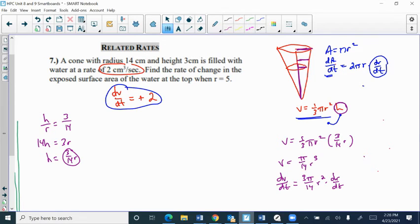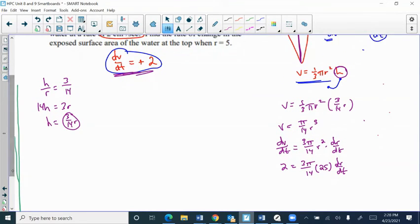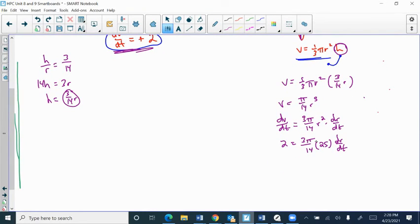The rate the radius is changing - that's what I'm going to need to solve for, because I already know dV/dt is 2. So I know that 2 could fit here. And the snapshot of when this is happening is when the radius is 5, so that value is 25. So I've got 75 pi over 14. Two equals 75 pi divided by 14 times dr/dt. So divide by 75 pi over 14, and it becomes 28 over 75 pi equals dr/dt.